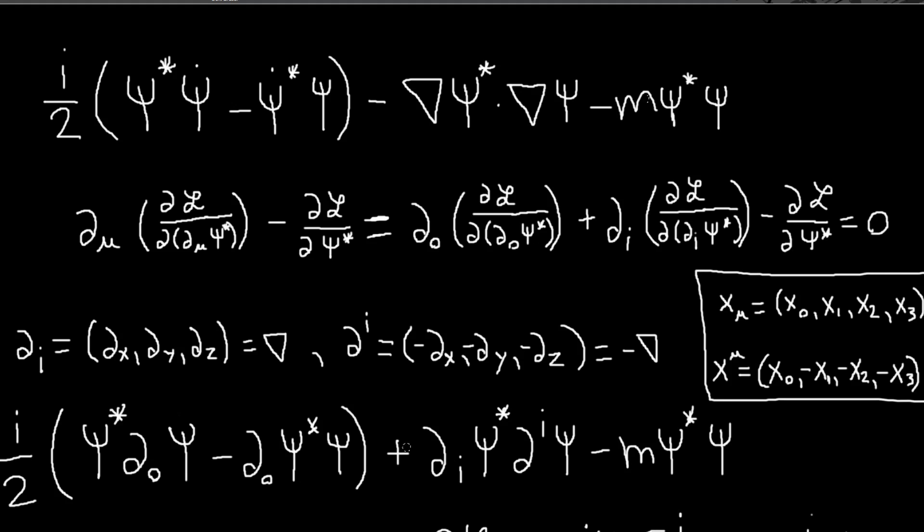I rewrote these dots as partial_0. This gradient I rewrote as partial_i with i lower. Then I kind of absorbed this minus i into this term, and that becomes partial_i with i raised. So now we get plus, and this term is still the same.